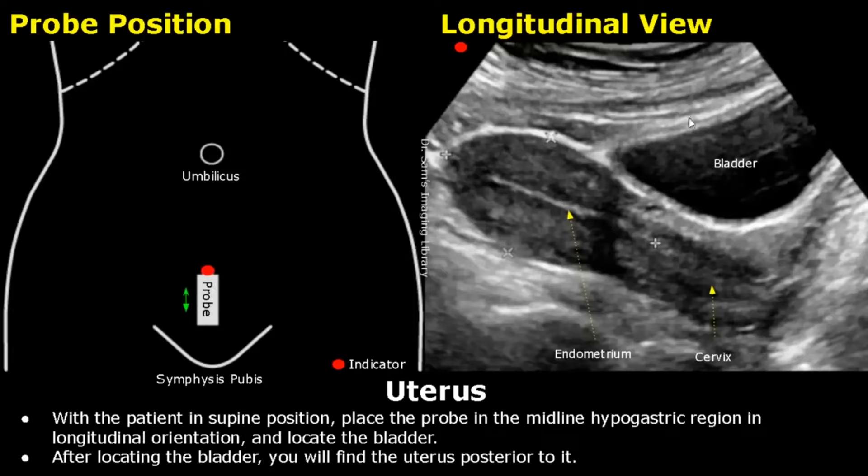The patient's bladder must be full for transabdominal scanning. After locating the bladder, you will find the uterus posterior to it. Here is the endometrium and this is the cervix.